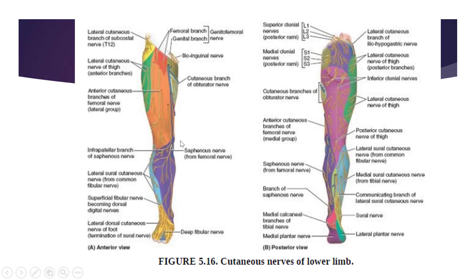The knee region is supplied by the saphenous nerve, which is a branch of the femoral nerve, including the infrapatellar branch of the saphenous nerve. Coming down into the leg, we can see areas supplied by the saphenous nerve and by the common fibular nerve, also called the common peroneal nerve — fibular and peroneal refer to the same nerve. The light blue area shown here is supplied by the lateral sural cutaneous nerve, which is a branch of the common peroneal nerve.